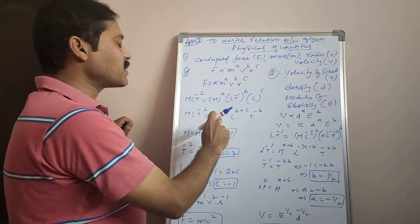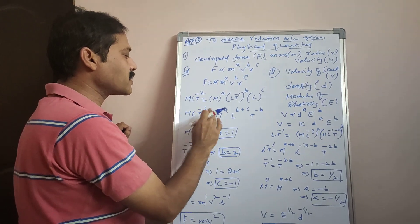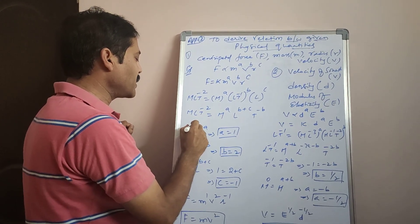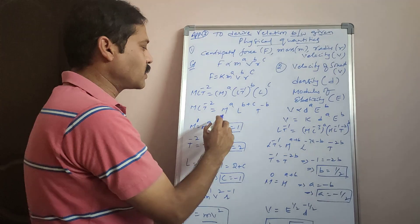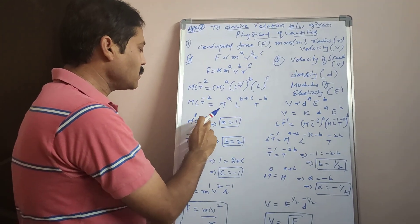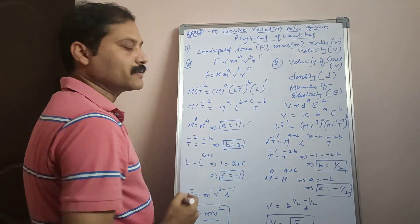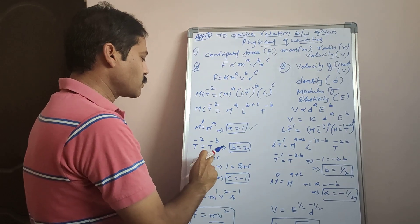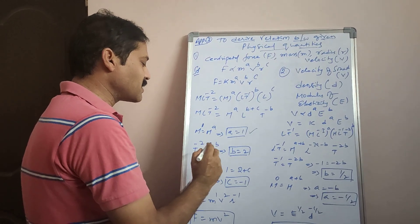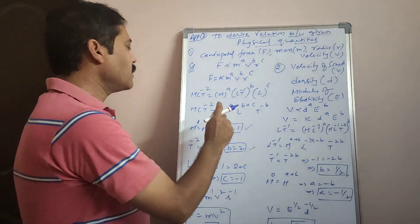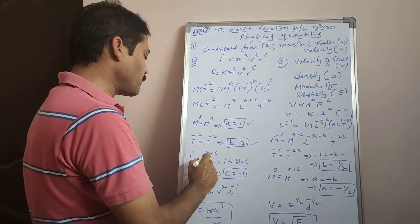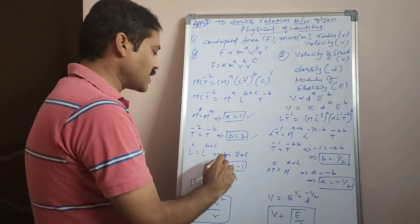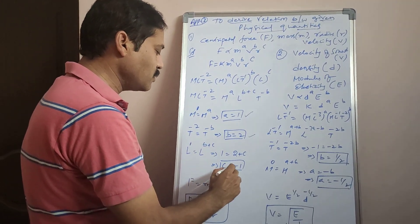Equating dimensions of the same physical quantities on LHS and RHS: M to the power 1 equals M power A, so A = 1. T power −2 equals T power −B, so −2 = −B, giving B = 2. Comparing L: L power 1 equals L to the power (B + C), so 1 = 2 + C, giving C = −1.